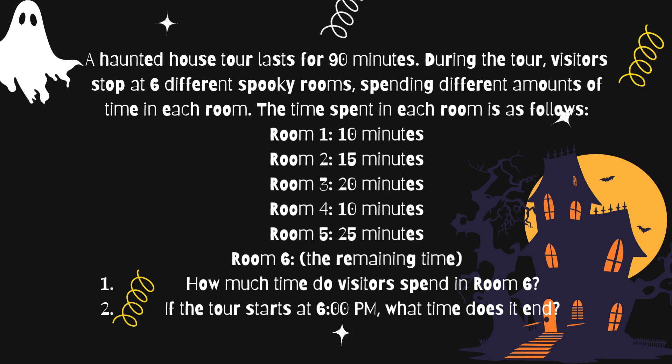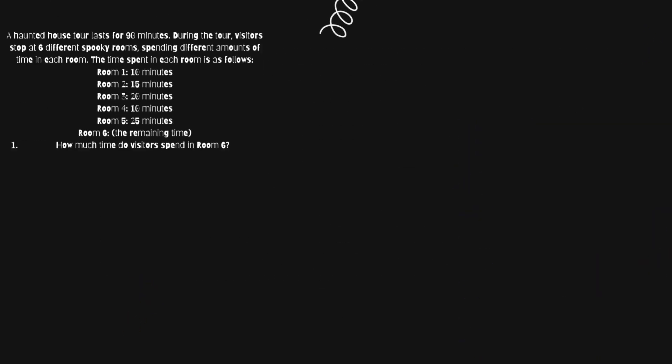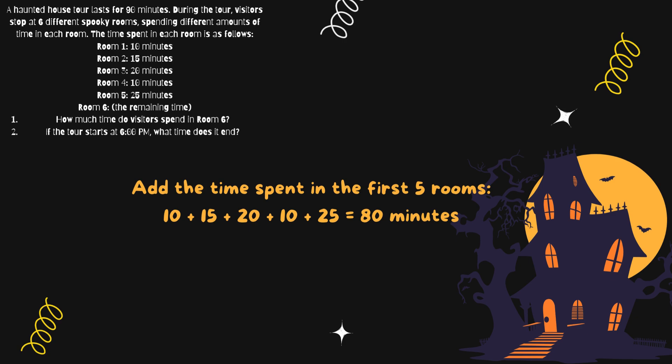Here's a simple way to solve it. First, let's add the time spent in the first five rooms. Room 1: 10 minutes. Room 2: 15 minutes. Room 3: 20 minutes. Room 4: 10 minutes. Room 5: 25 minutes. Add these all together.